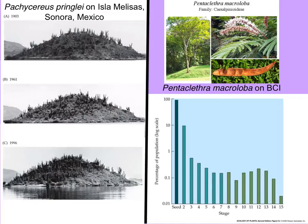On the left, we can see photo documentation of changes in the population of a cactus on an island in Mexico. The Pachycereus cactus are kind of spread out and of moderate size, and you can see how the individuals fill in over the years.